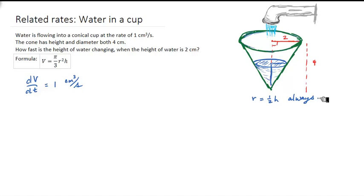So at the very beginning, r and h are 0, because there's no water. And then as the water level increases, the radius will always be 1 half of the height for the water.